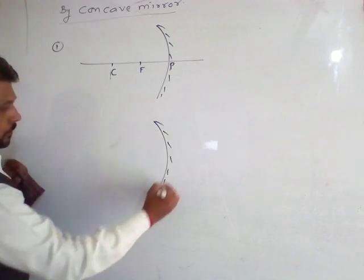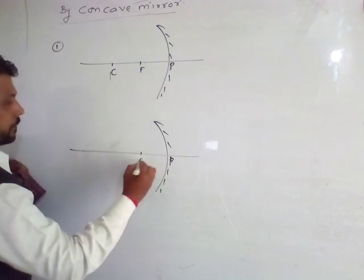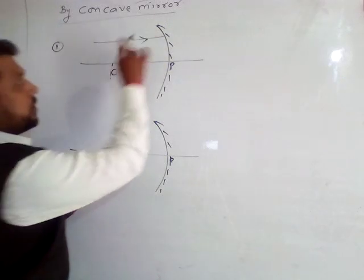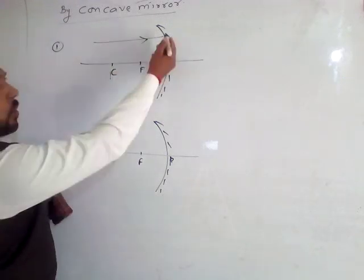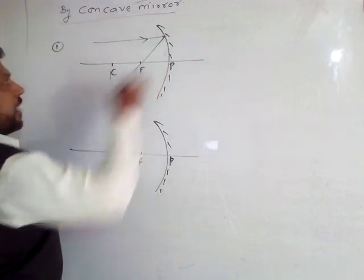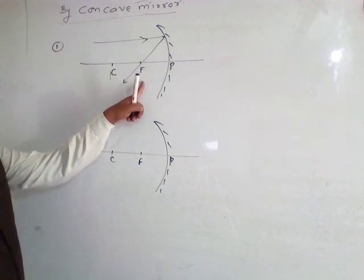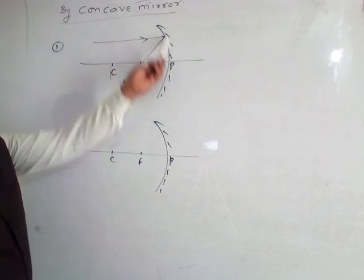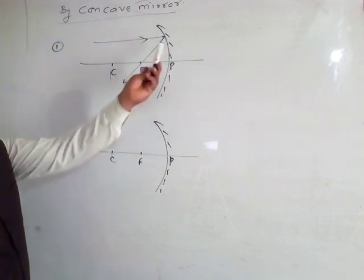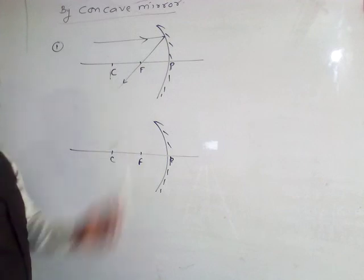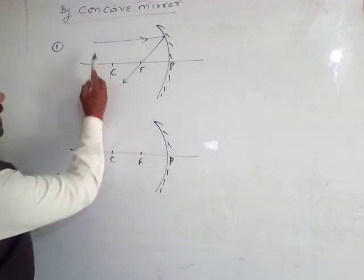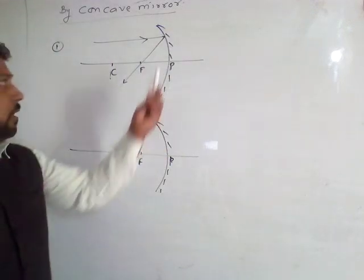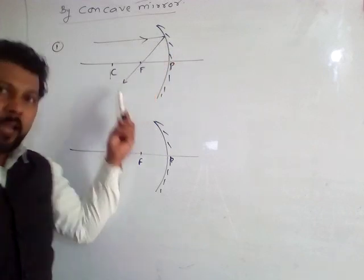When any parallel ray of light falls on the Concave Mirror, then after reflection, it will pass through the Focal Point F. So we can say that when any parallel ray of light falls on the Concave Mirror, then after reflection, it will pass through F.